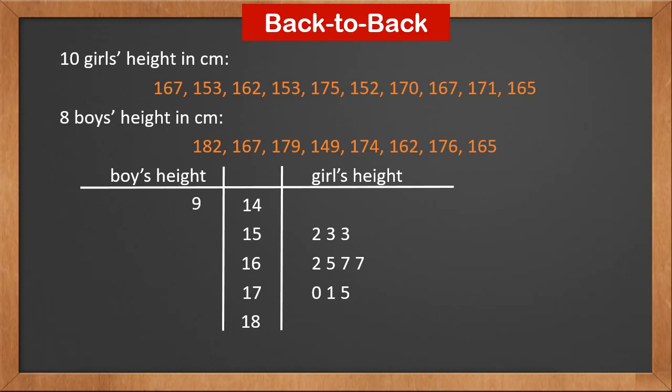Now we put leaves for boys on the left. For 149, we put 9 to the left of 14. There are 162, 165, and 167 for boys, so we put 2, 5, and 7 to the left of 16. However, unlike girls, they are arranged in order from right to left — so the smallest leaf 2 is placed far right, 5 in the middle, and 7 far left. When you read the data for boys, remember to do it from right to left. We finish by doing the same for the rest of the boys' data.